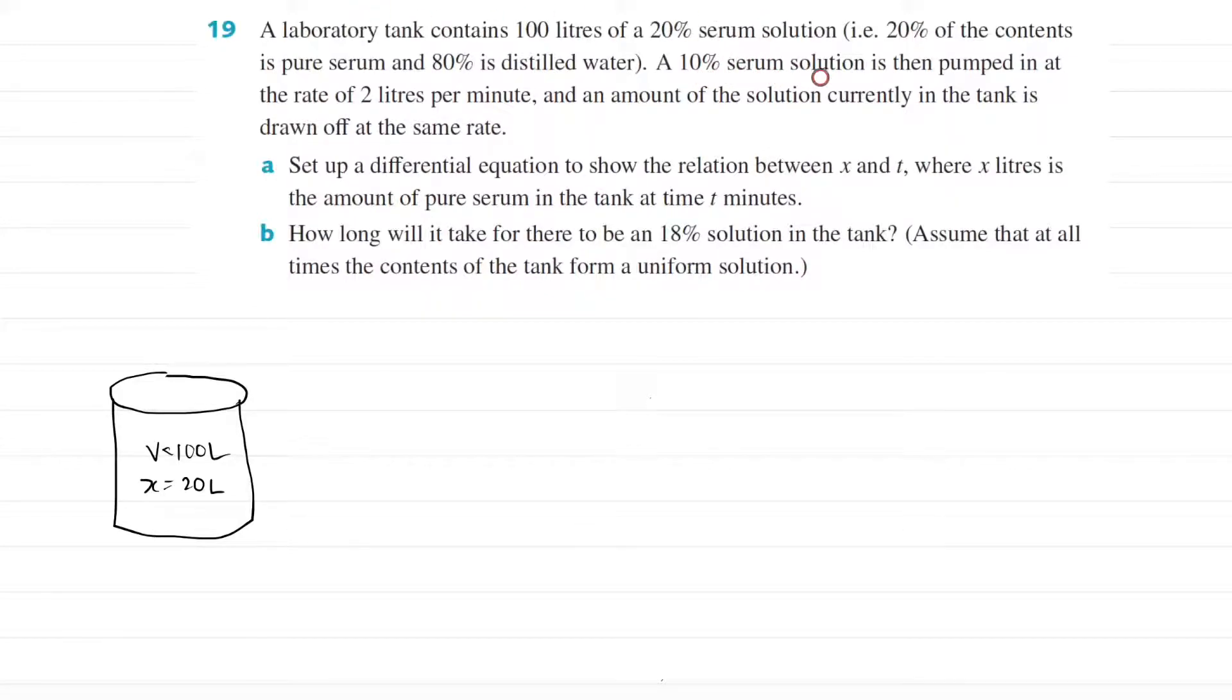And a 10% serum solution is then pumped in at a rate of 2 liters per minute. So 2 liters per minute, you can let that be your dv/dt, which in this case is just 2. And of course you need your concentration as well, dx/dv, which in this case is 10%. So you're going to say 0.1 or 1 on 10.